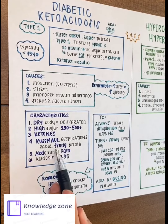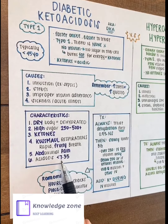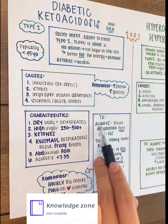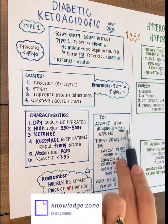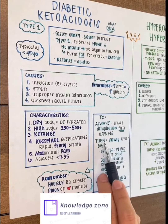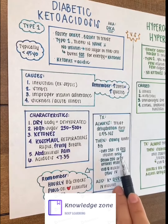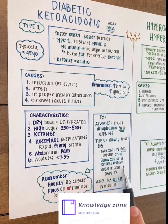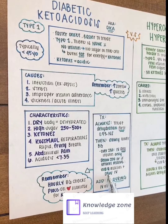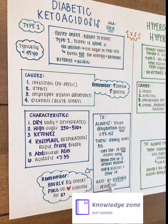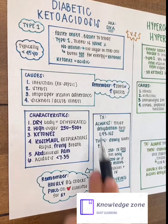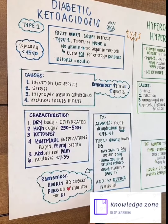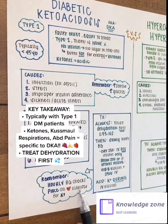Remember, fruity breath and acidosis are present as well. For treatment — big key — we always treat the dehydration first with fluids. Then we treat the glucose levels with IV regular insulin. When sugars are lower and ketones have resolved, we give sub-Q insulin and IV D5W. There's an imbalance of potassium here, so we add potassium and place the patient on a heart monitor. And don't forget those hourly glucose checks.